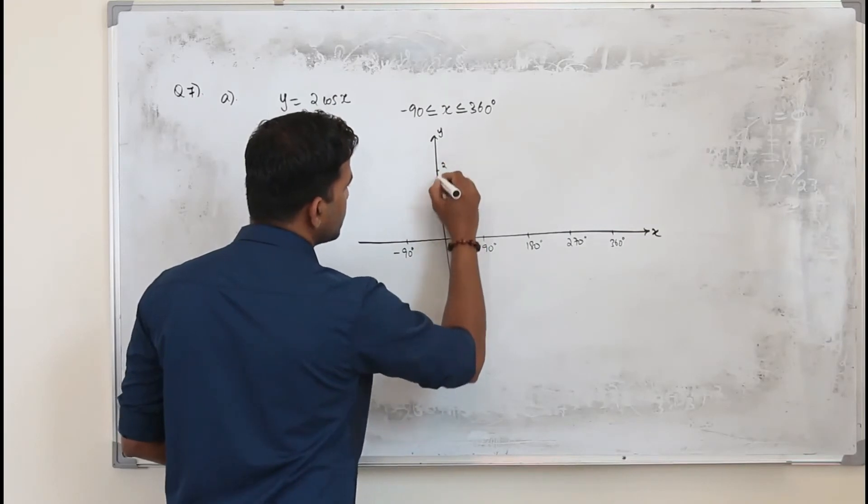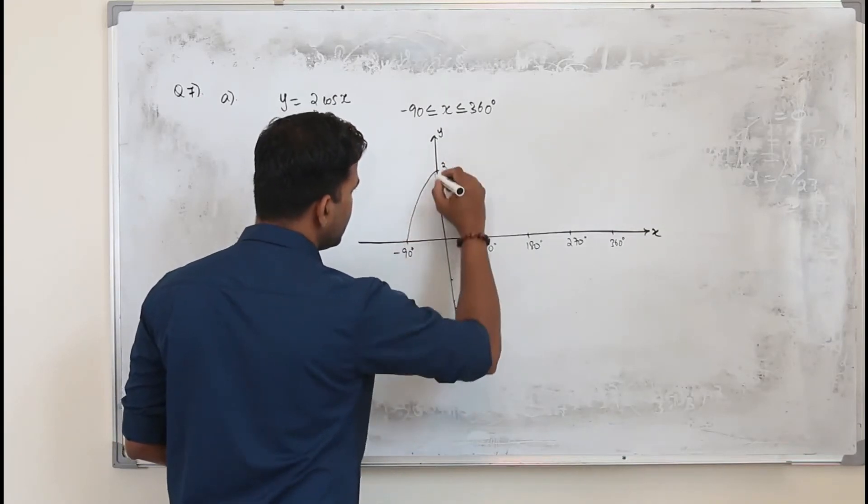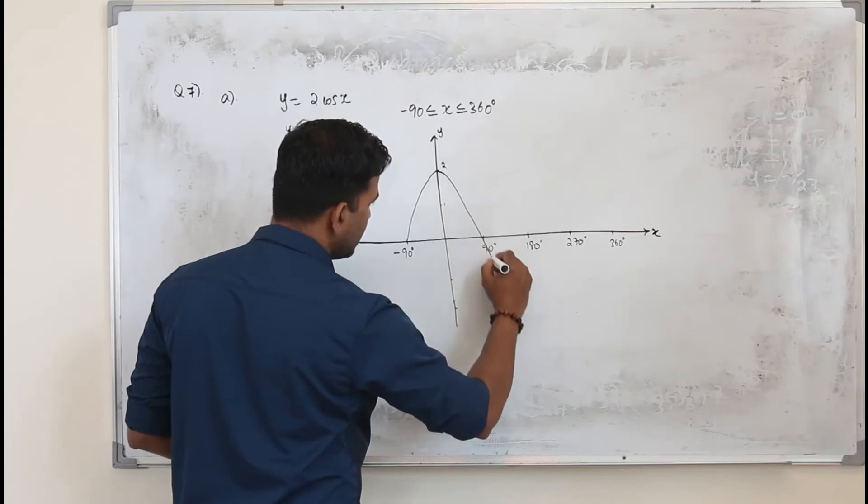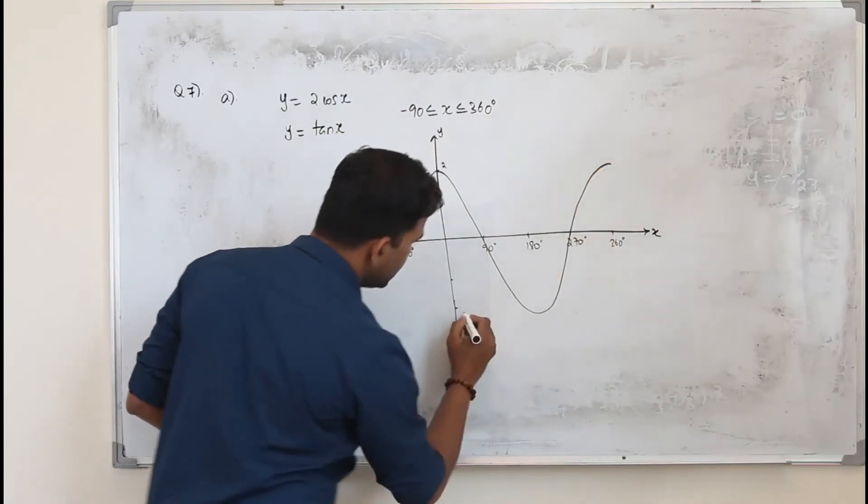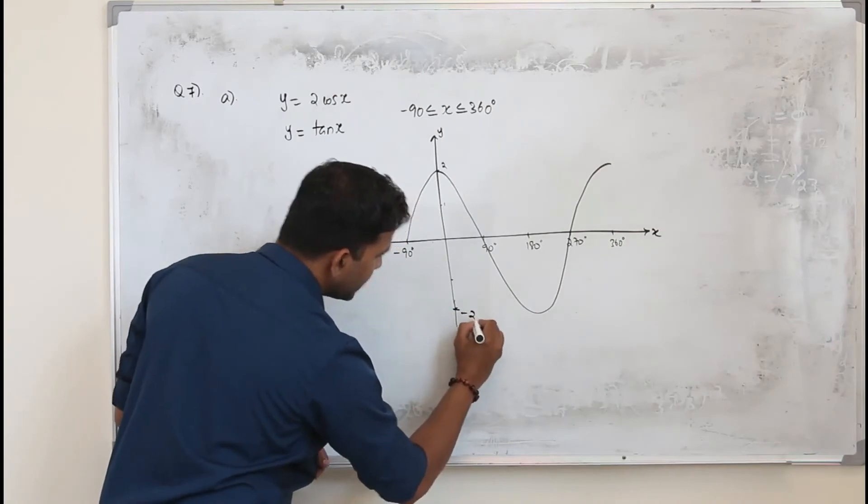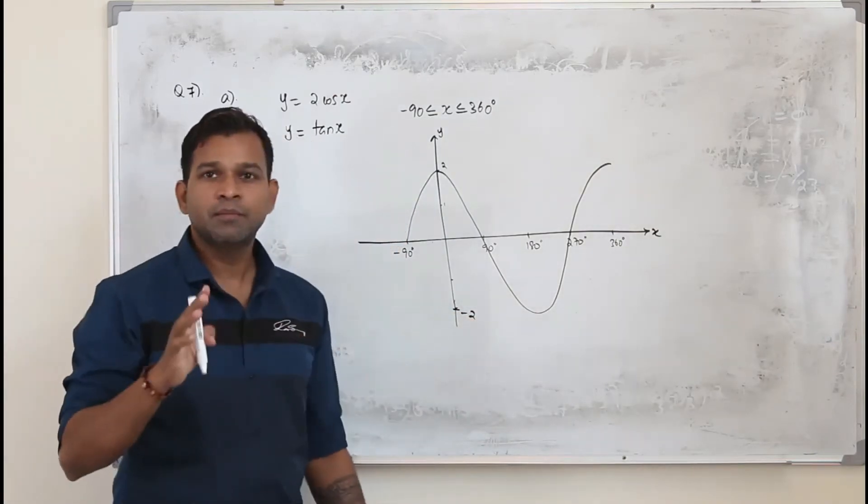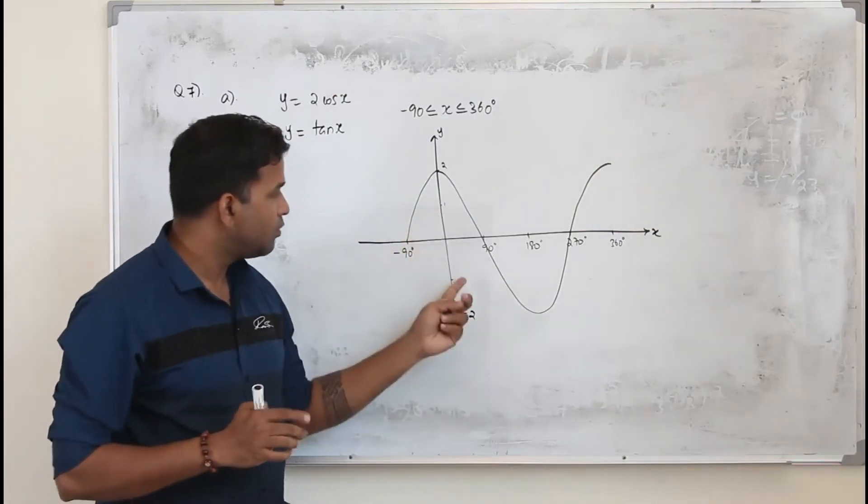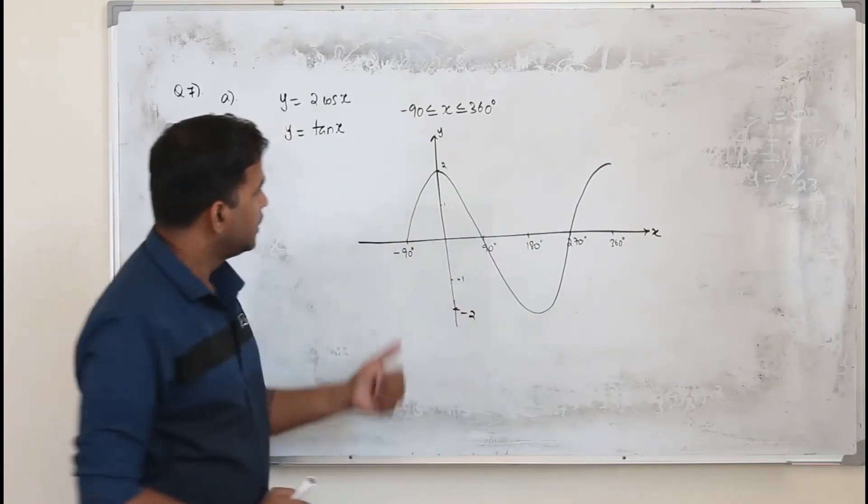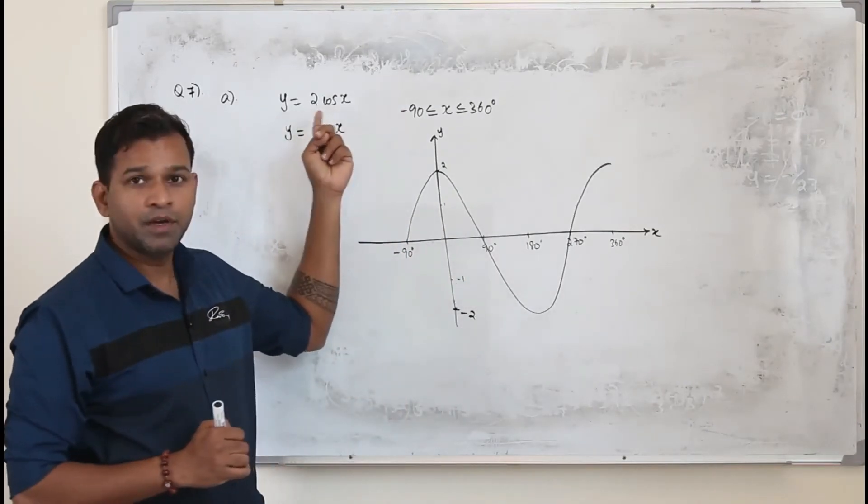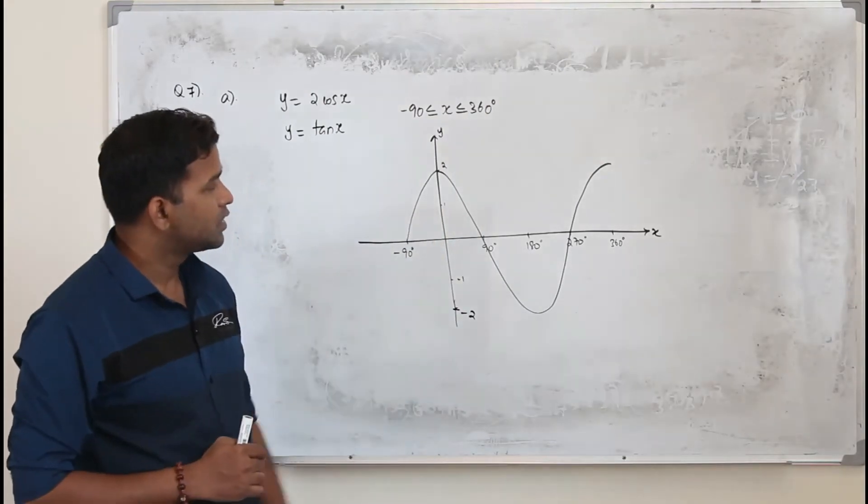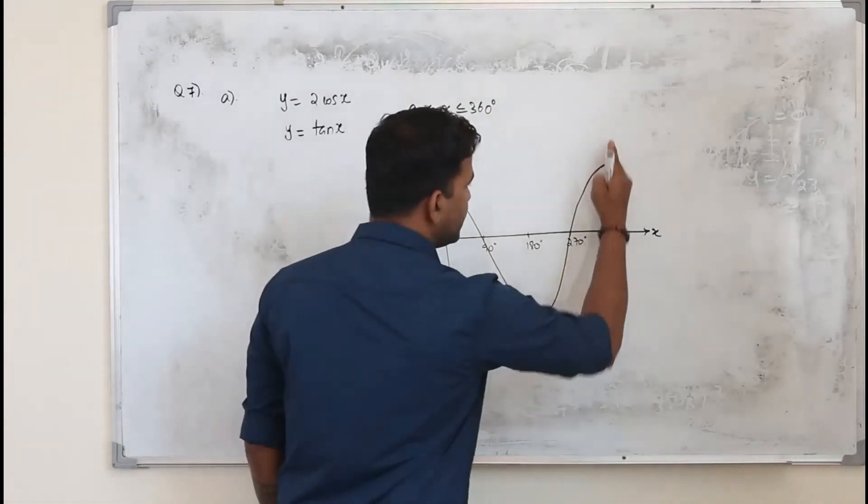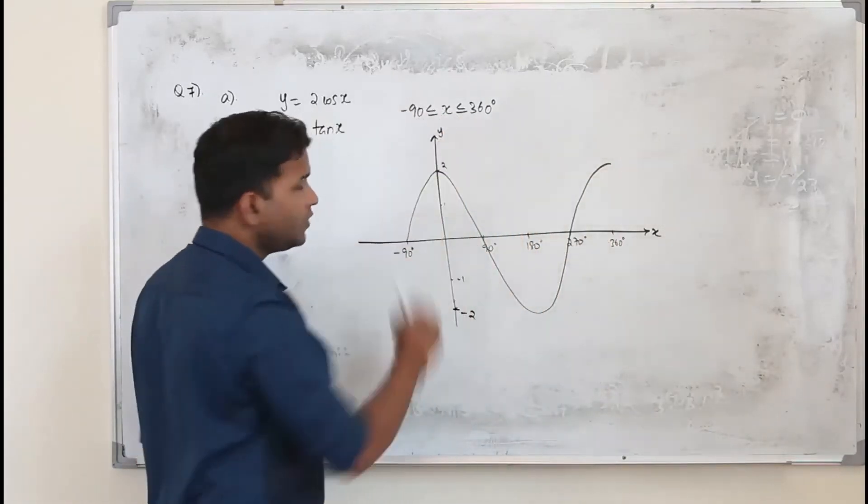So if this is 1, this becomes 2. The cosine graph starts from here. The minimum point will be negative. Usually the maximum and minimum values are 1 and -1; now with the graph multiplied by 2, the y-coordinates become 2 and -2. This is the cosine graph; you stop at 360 degrees.